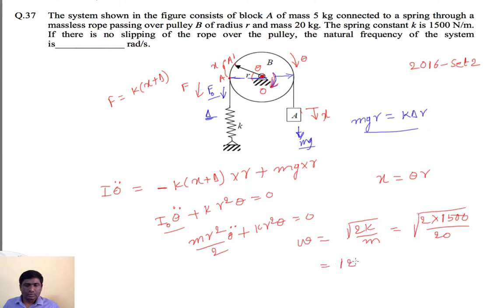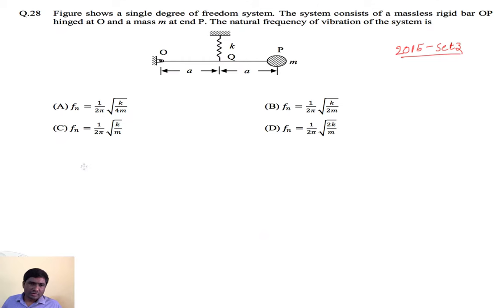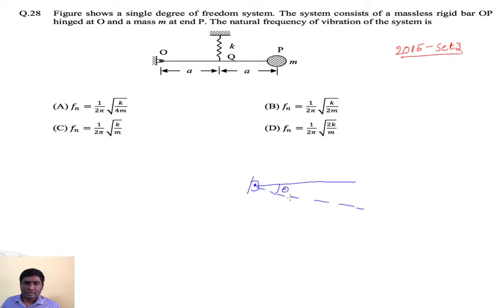Substituting the values, we get 12.25 radians per second. The next problem is a simple and direct one, which we have already seen — a displaced position with angle theta.